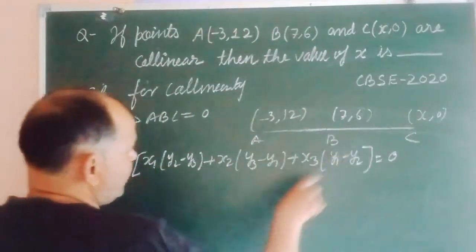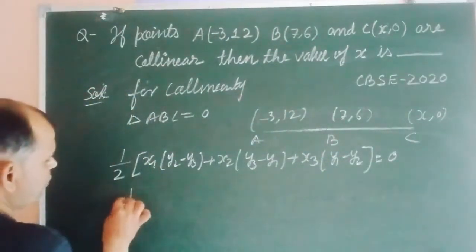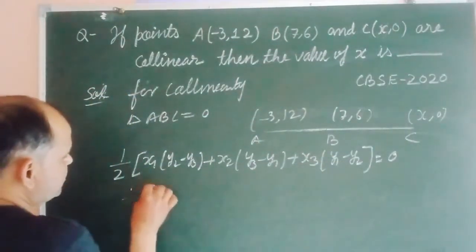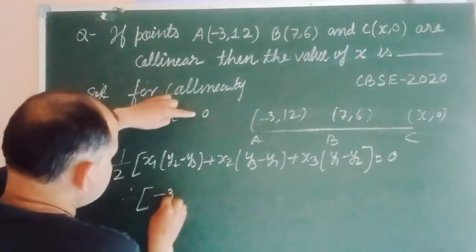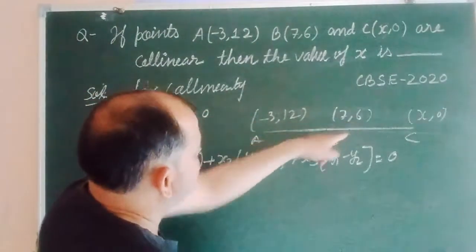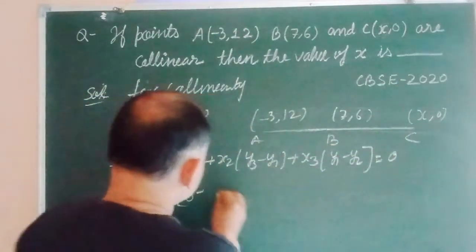So 2 is multiplied by 0. Therefore, half times X1, X1 is minus 3, Y2, here Y2 is 6, minus Y3 is 0.